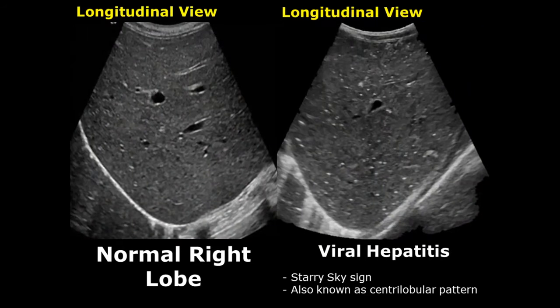Viral hepatitis has one classic sign known as the starry sky sign, also known as the centrilobular pattern. In the liver you can see echogenic dots which resemble a starry sky. Thank you so much for watching — please subscribe and stay tuned for more imaging videos.